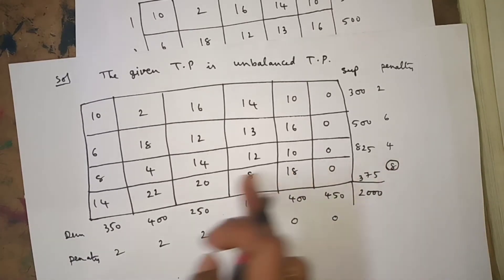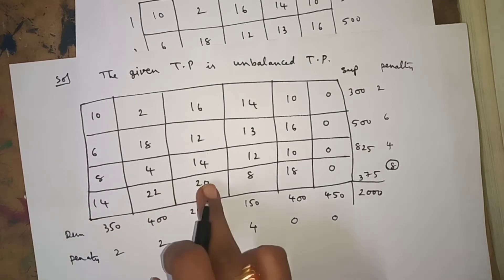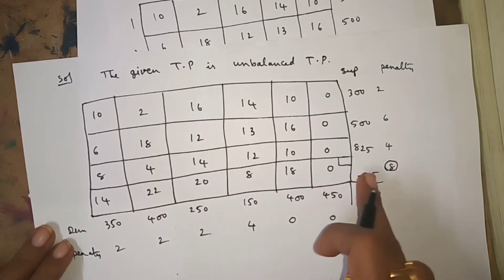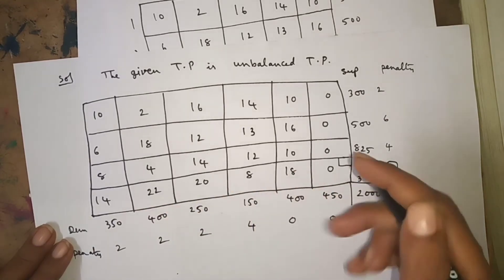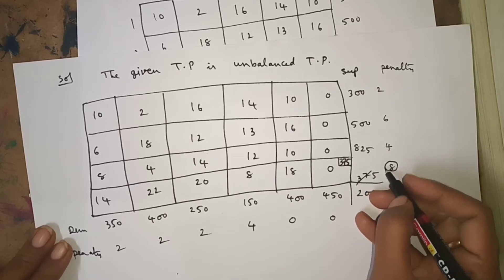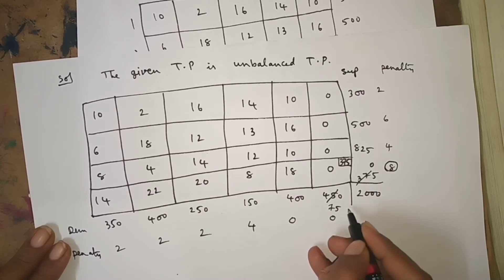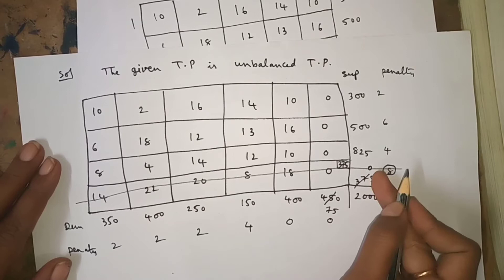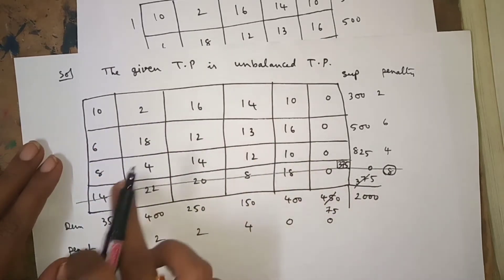Enter into the last row. The least cost element is 0 — out of 14, 22, 28, 18, 0, the minimum is 0. See the corresponding demand and supply: minimum is 375. I will allocate 375 here, leaving 0 supply remaining. The row where supply becomes 0, cancel that entire row with pencil. From the remaining, again find penalties.